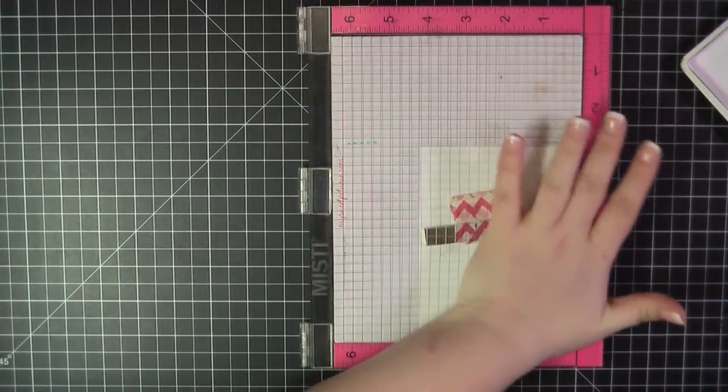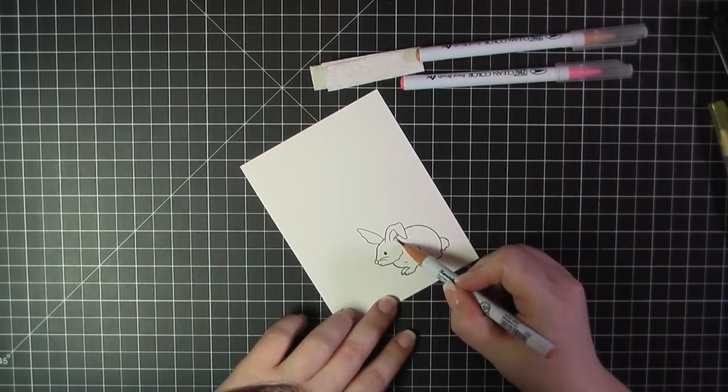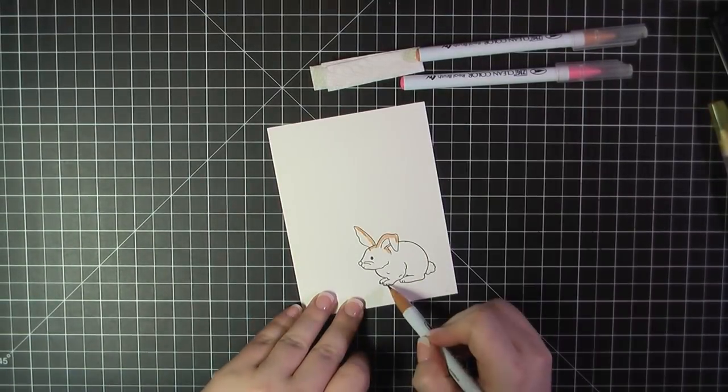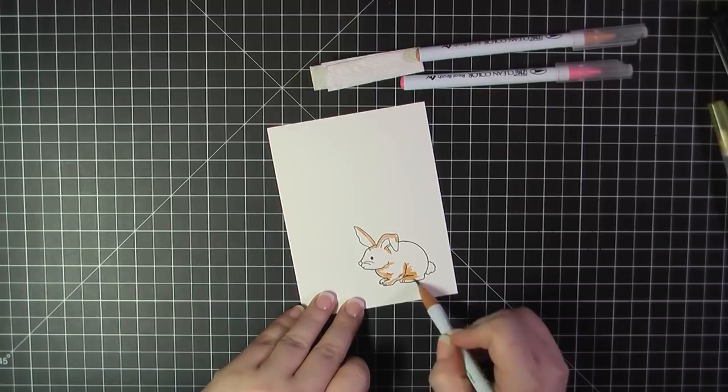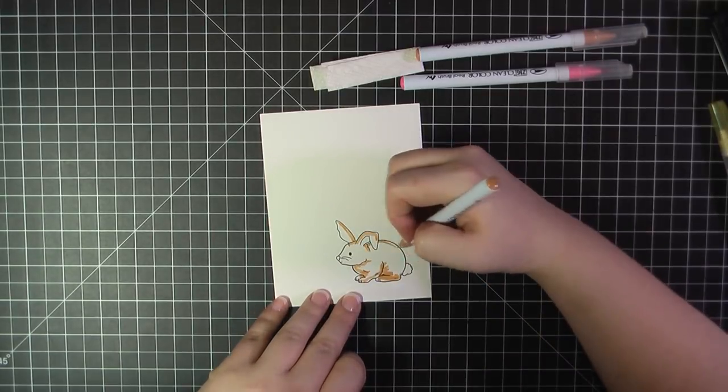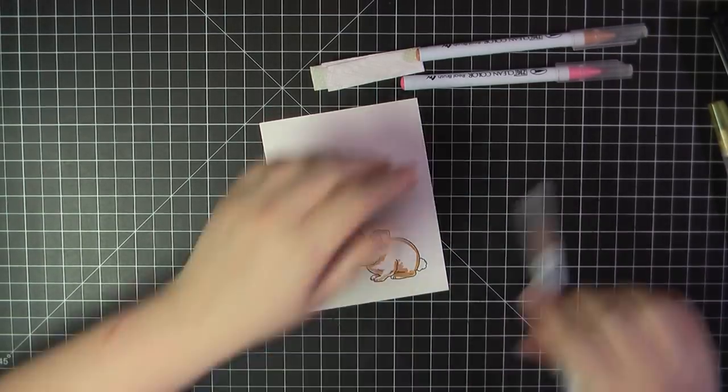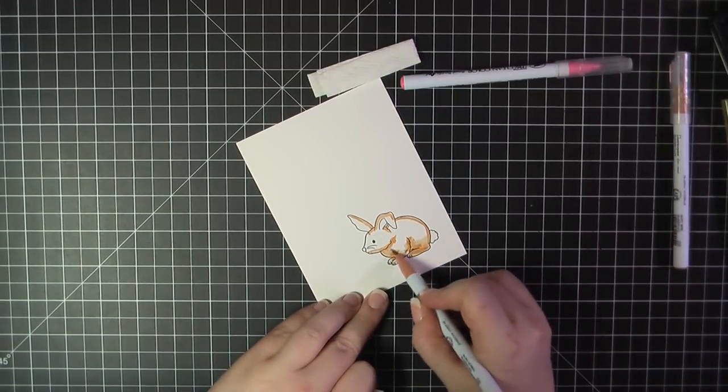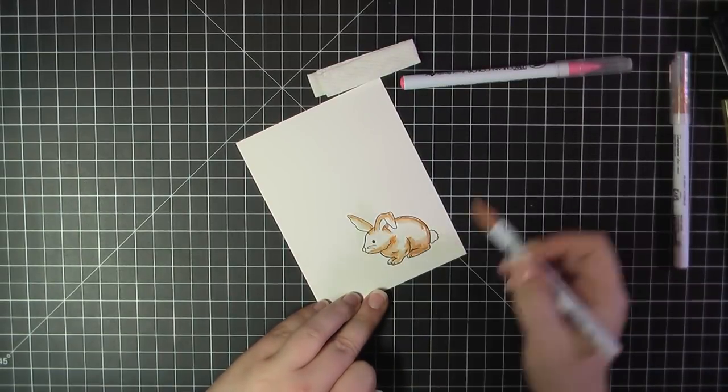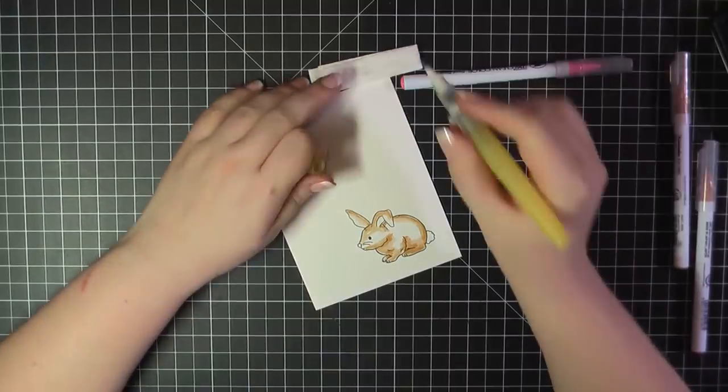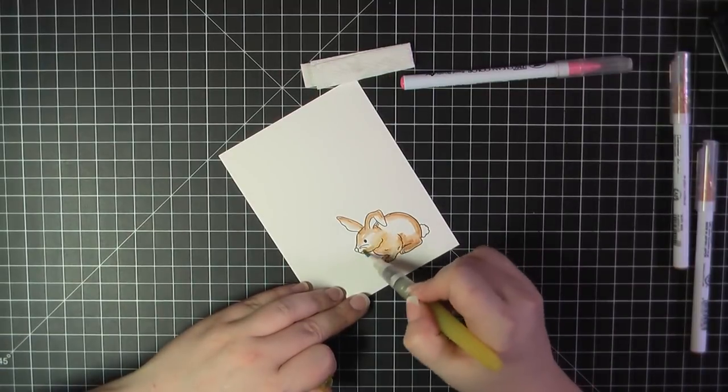For card number two, I'm going to do a little bit of watercoloring with that bunny. I'm stamping with Simon Says Stamp Intense Black Ink on some Bristol Smooth cardstock. I just left this coloring in really quickly here. It's very simple. I use my Zig Clean Color Real Brush markers and I will have the exact colors I used listed on my blog post for you.